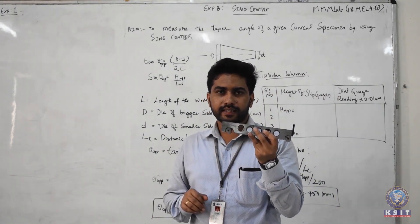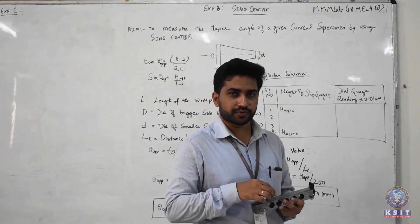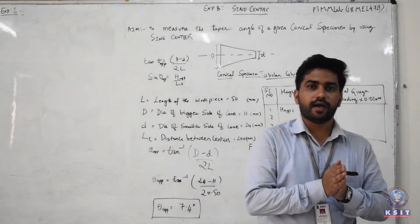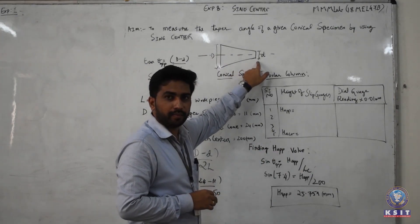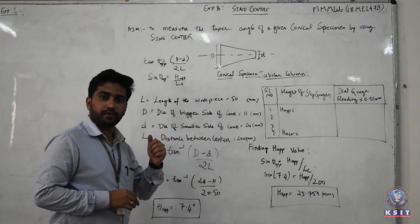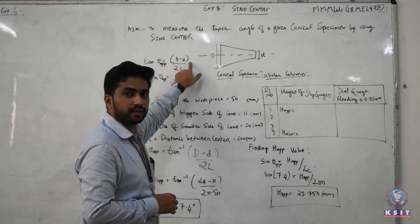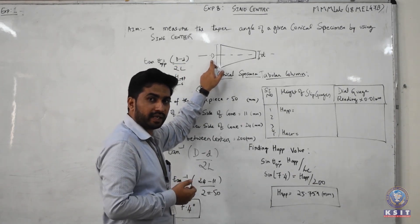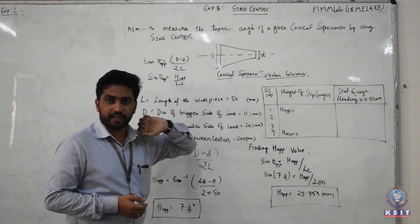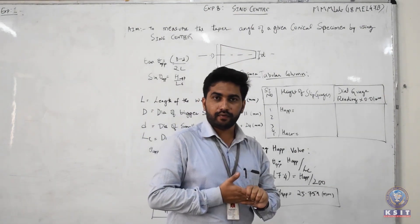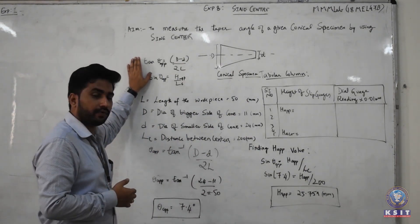We will conduct the experiment with respect to the sine bar and the sine center. The working principle will be the same, and the difference lies in the kind of specimen that we use. The specimen used here is the conical surface, which has two points of diameter: the larger diameter D and the smaller diameter d. In order to find the taper angle for such a conical surface, we will always use the formula: tan β = (D − d) / 2L, where L is the length of the specimen. This formula is used as a reference to find the approximate angle.